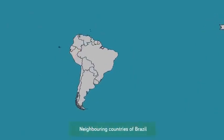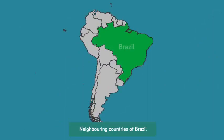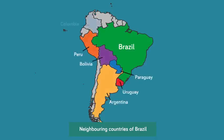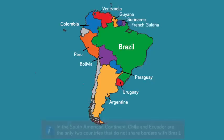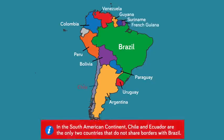The neighboring countries of Brazil are Uruguay, Peru, Argentina, Paraguay, Bolivia, Colombia, Venezuela, Guiana, Suriname, and French Guiana. In the South American continent, Chile and Ecuador are the only two countries that do not share boundaries with Brazil.